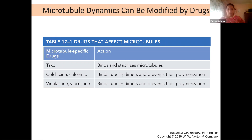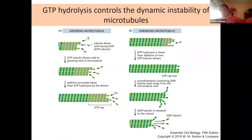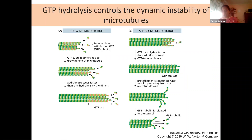There are three drugs you should know about. One class binds and stabilizes microtubules so they can no longer depolymerize. Normal cell division requires microtubules to depolymerize for chromosomes to reach their poles and for division to complete. If they cannot depolymerize, the cell is stuck in that state and cannot complete division.